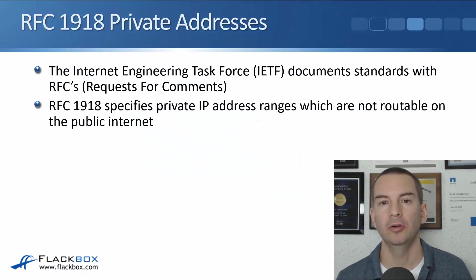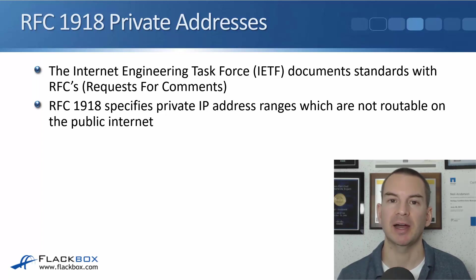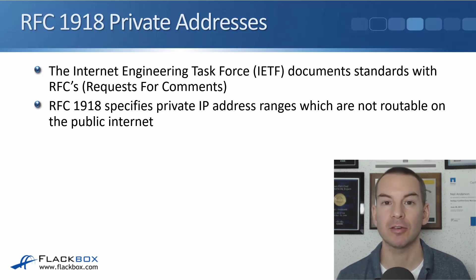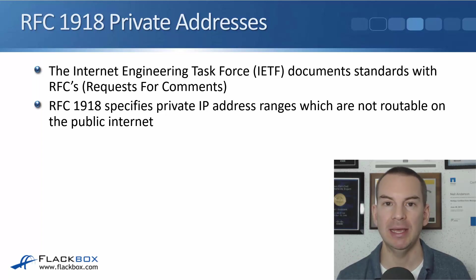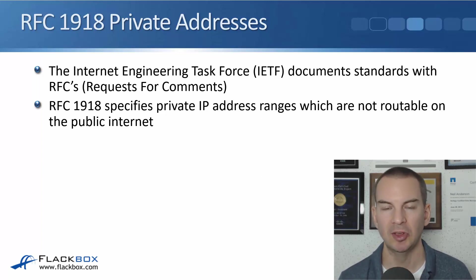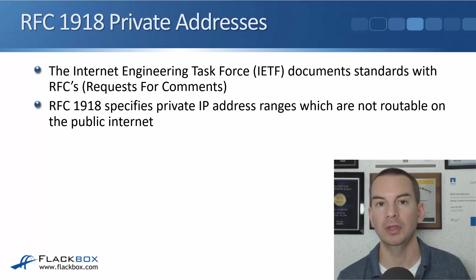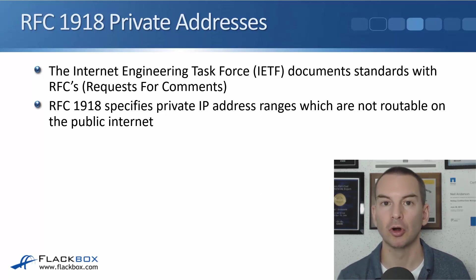In this lecture I'll give you an overview of IPv4 address exhaustion and Network Address Translation, that's NAT. A lot of what we're going to cover here was already spoken about back in the subnetting section, but that was a while back so I'll give you a quick review again here. First up, our RFC 1918 private addresses. The IETF documents standards with RFCs, and RFC 1918 specifies private IP address ranges which are not routable on the public internet. So if you send traffic with a destination address which is a private IP address out to the internet, the service provider routers will just drop that traffic.